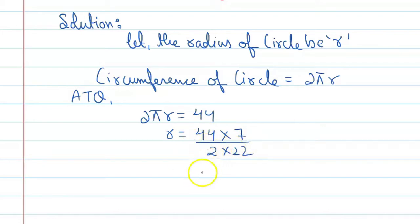Alright, so when we find r's value here, then see, 2 into 22 is 44 and this 44 cancels. So r is equal to 7 centimeters. Alright.